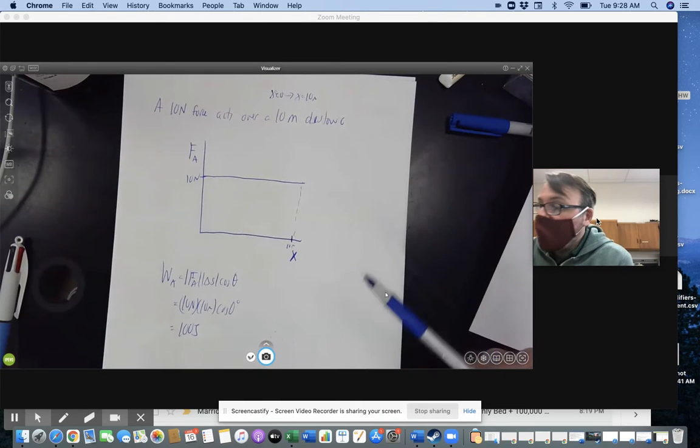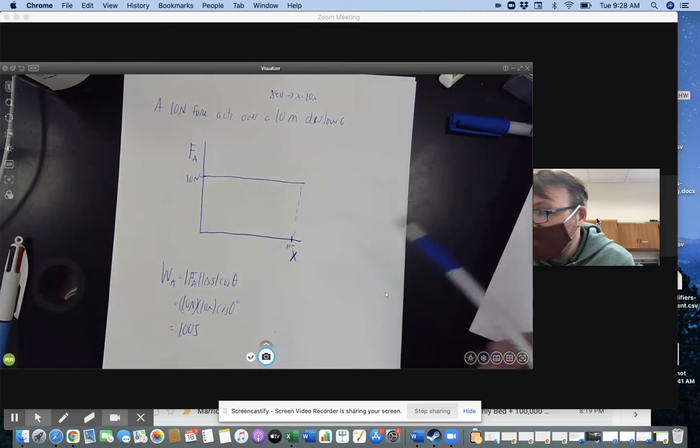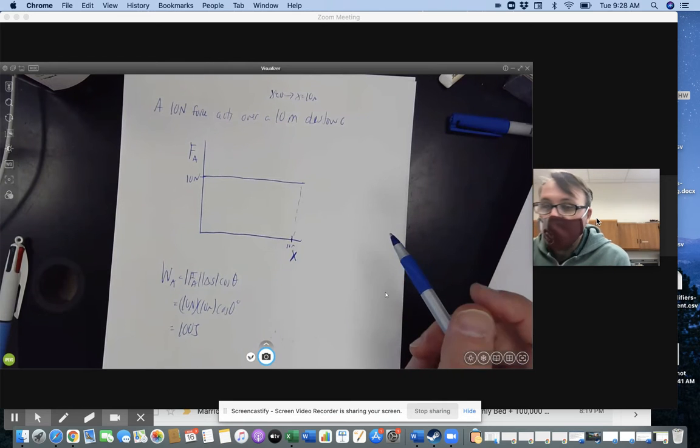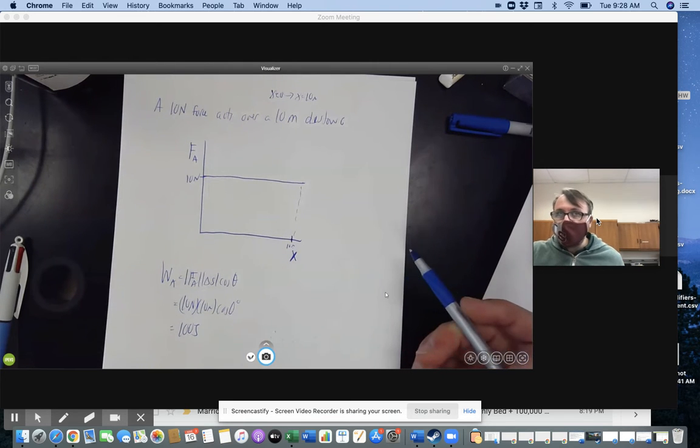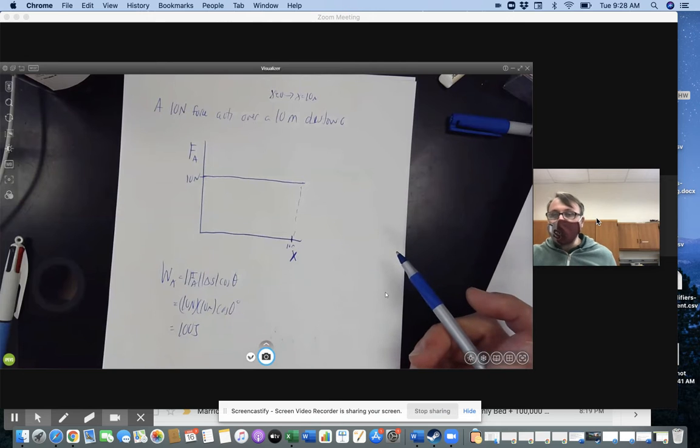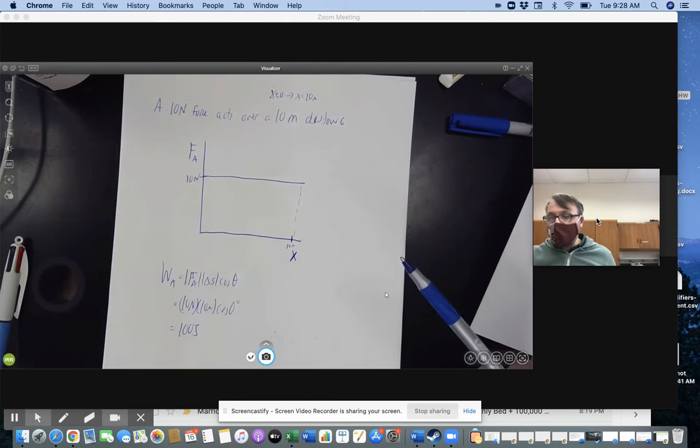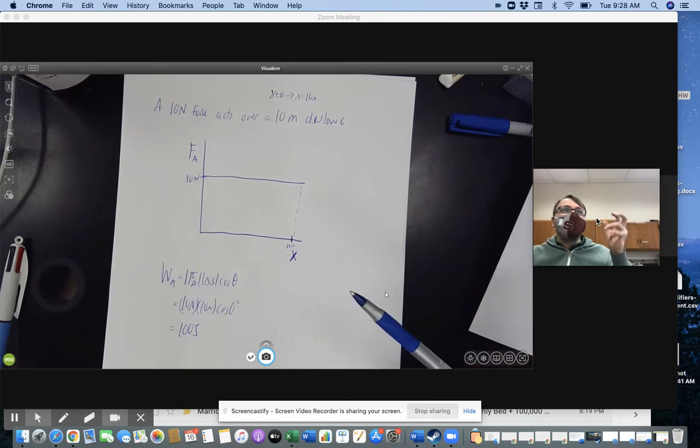My argument is there's something about this graph that also says 100 joules. So what is that? So stop the video for a second and think about it. When you start the video up and you think about this, well, here you go, 100 joules. Well, what about the graph? So there's no point on the graph that says that.